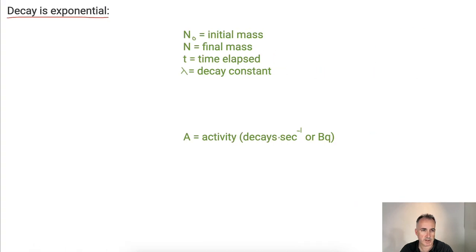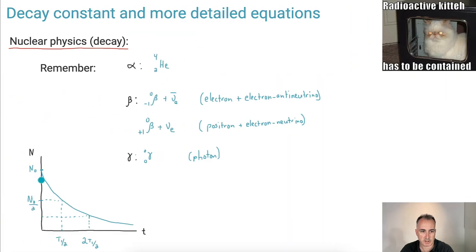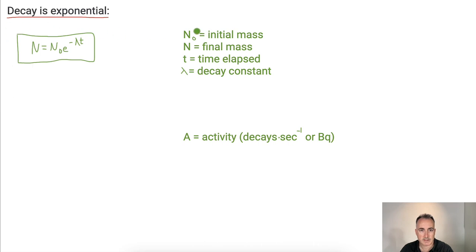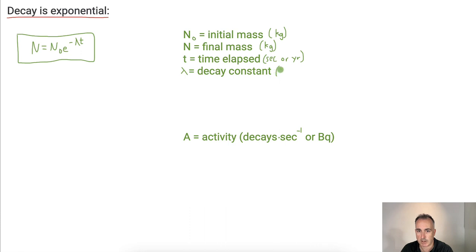Let's go deeper with the equation. We know we had this exponential equation. We can write the equation for the graph of N: it's N equals N₀ e to the minus lambda t. This is in your data booklet — you don't have to memorize it. N₀ is your initial mass, maybe in kilograms. The final mass N will also be in kilograms. Time elapsed might be seconds or years, and the decay constant will then be the inverse of those units — seconds to the minus one, or years to the minus one, and so on.